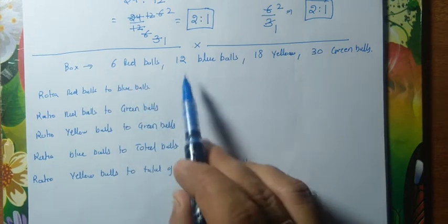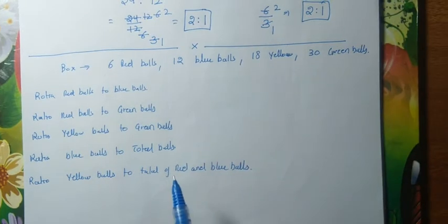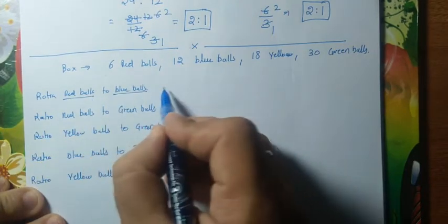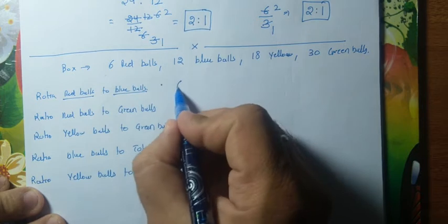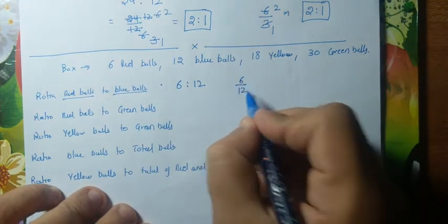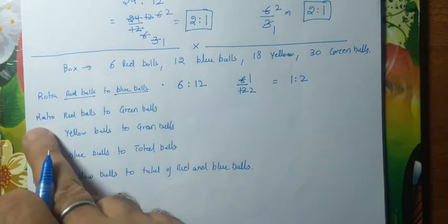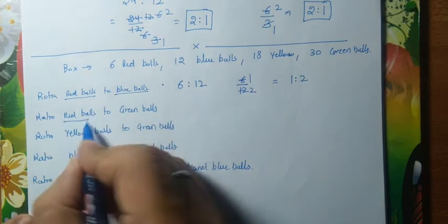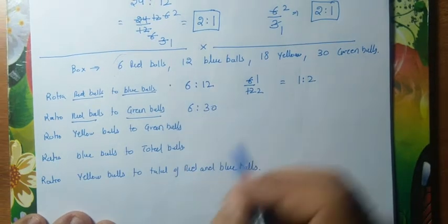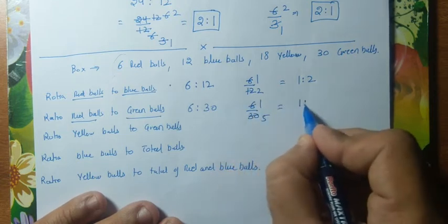Suppose a box has 6 red balls, 12 blue balls, 18 yellow balls, and 30 green balls. Find the ratio of red ball to blue ball: red balls are 6, blue balls are 12, so ratio is 6:12. Simplify: 6×1=6, 6×2=12, so ratio is 1 : 2. Second question — ratio of red ball to green ball: red is 6, green is 30. So 6 by 30, simplified gives 1 : 5.